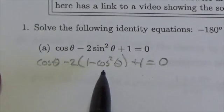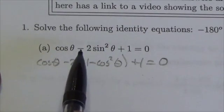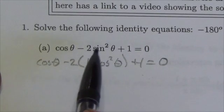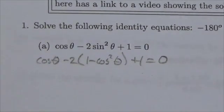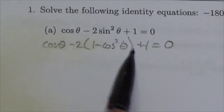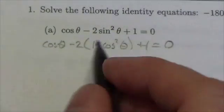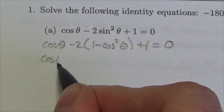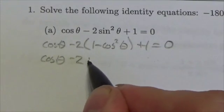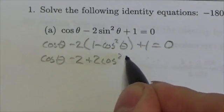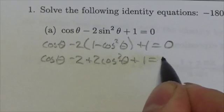Notice I put those in parentheses here because it's negative 2, that's 2 times the sine squared. And if I'm replacing sine squared of 1 minus cosine squared theta, that negative 2 has to be multiplied by both. So I multiply that out and I will get the cosine of theta minus 2 plus 2 times the cosine squared of theta plus 1 is equal to zero.